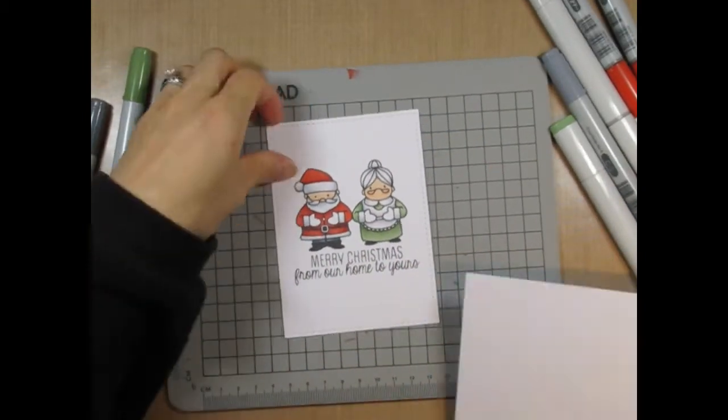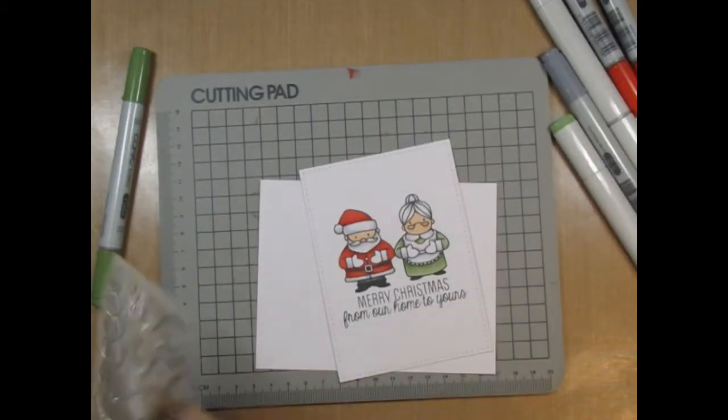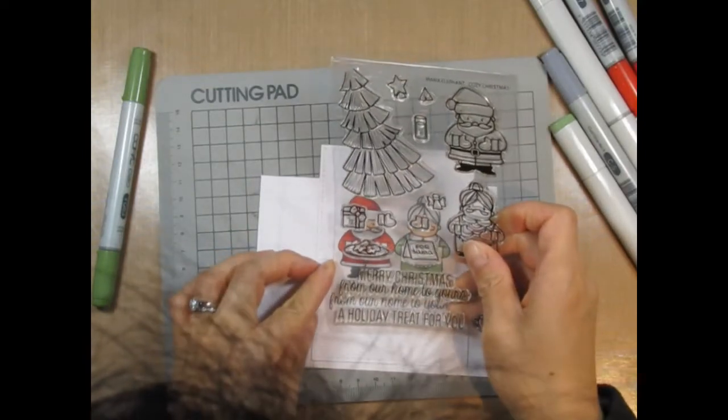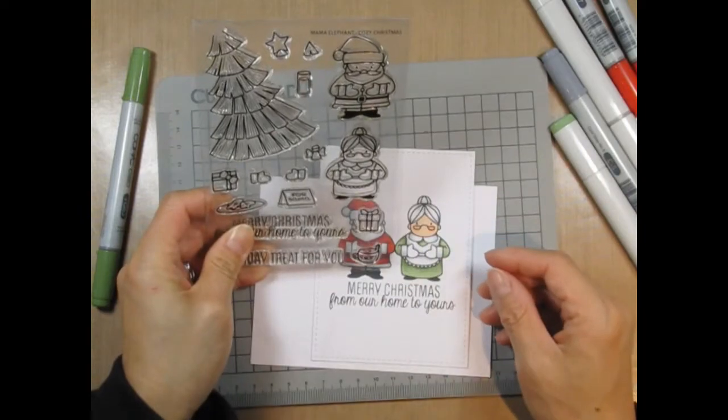So after Mrs. Claus and Santa are colored in, I'm going to take another piece of paper to stamp the smaller elements on it, and I'm going to be layering those 3D style with foam tape.